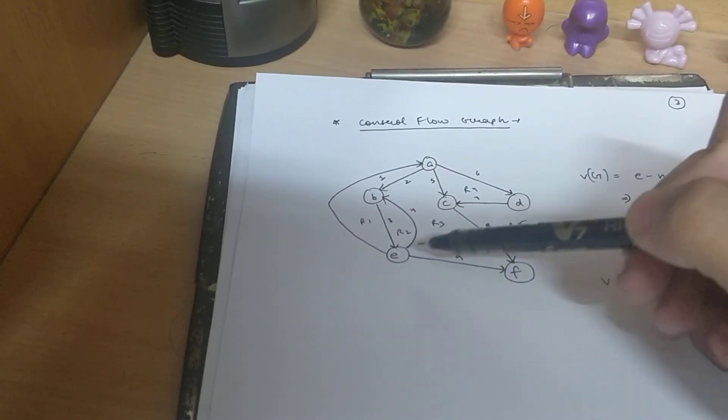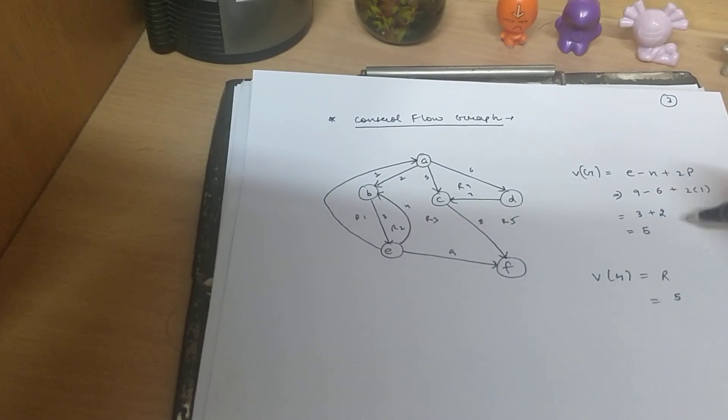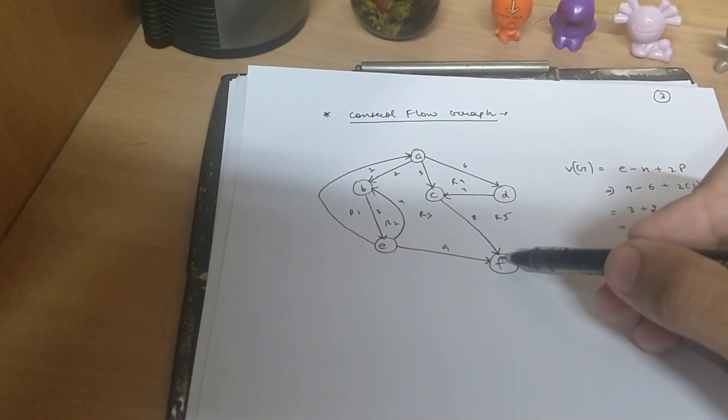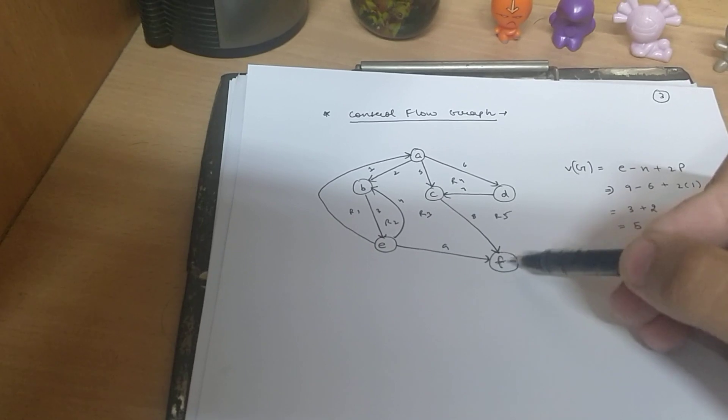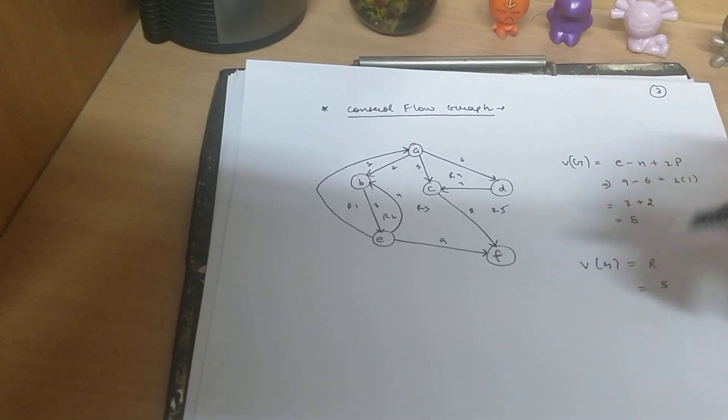And the number of nodes as 1, 2, 3, 4, 5 and 6. 6 nodes. And P is 1, this one. Because it is an independent node. It does not have any further node that it denotes.